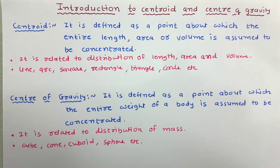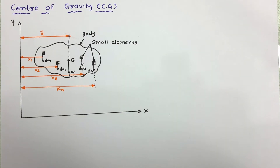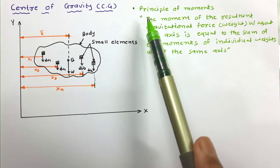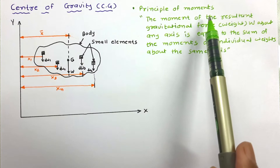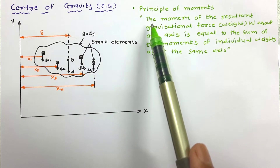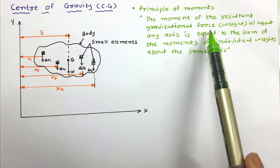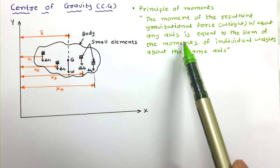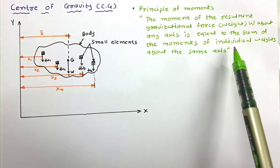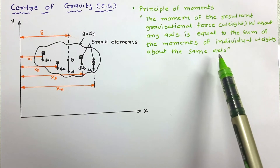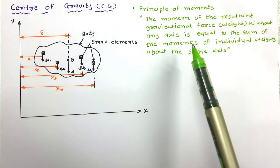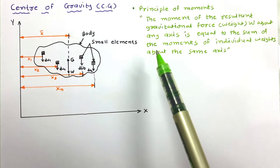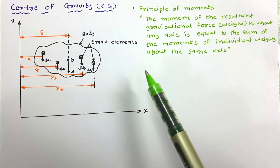Now let us try to derive the equation for center of gravity. The center of gravity of any object can be found out by the principle of moment applied to parallel forces. This principle of moment can be stated as: the moment of the resultant gravitational force W, taken about any axis, is equal to the sum of individual moments of small weights about the same axis.